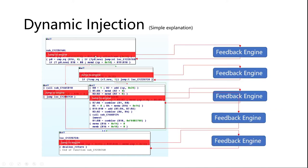If we inject the code to every block of the code — injecting here and here and here — then we can collect the running status of the program. We can collect a lot of useful information. Most importantly, we can use this information to calculate the code coverage. That's what we have done.